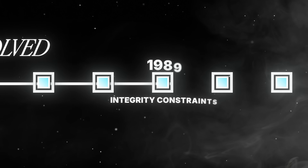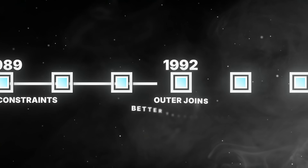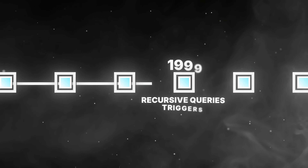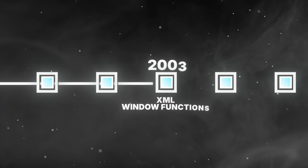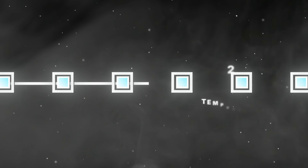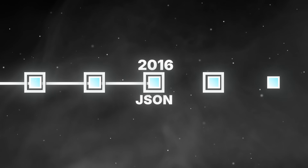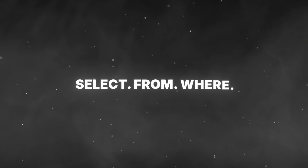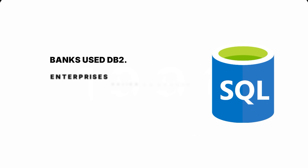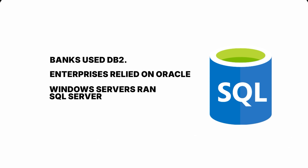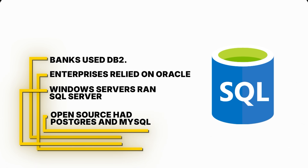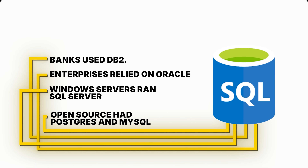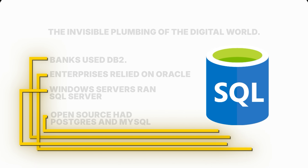As the years passed, SQL evolved. Integrity constraints in 1989. Outer joins and better transactions in 1992. Recursive queries and triggers in 1999. XML and window functions in 2003. Temporal tables in 2011. JSON in 2016. Each version stretched SQL further, but its core remained the same: select, from, where. By the 1990s, SQL was everywhere. Banks used DB2. Enterprises relied on Oracle. Windows servers ran SQL Server. Open source had Postgres and MySQL. Every one of them spoke a dialect of the same language. SQL was no longer exciting. It was just normal — the invisible plumbing of the digital world.